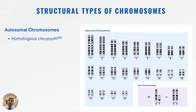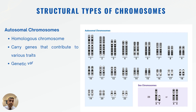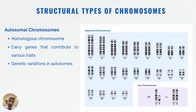Regarding structural types of chromosomes, we have autosomal chromosomes and non-autosomes, which are sex chromosomes. Autosomes are numbered from 1 to 22, with chromosome number one being the largest and chromosome 22 being the smallest. Homologous chromosomes come in pairs; each pair consists of two chromosomes, one from the mother and one from the father. These homologous chromosomes create genes that have important functions in various traits, and genetic variation in autosomal chromosomes brings differences in our traits.